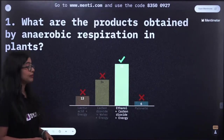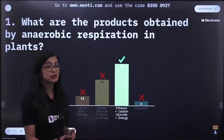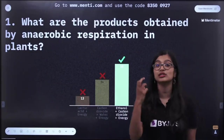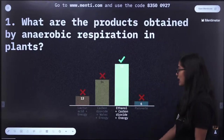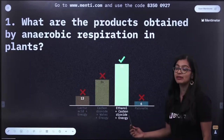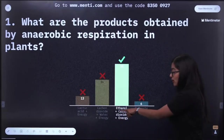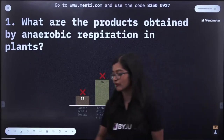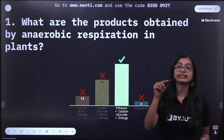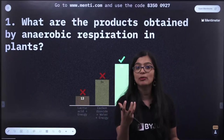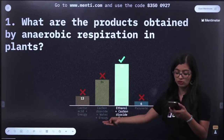The answer is C — ethanol, carbon dioxide, and energy. Anaerobic respiration occurs in the absence of oxygen. In plants and yeast, it produces ethanol, which is a two-carbon molecule, along with CO2 and very little energy due to the incomplete breakdown of glucose. Pyruvate is the intermediate formed in the cytoplasm; it either enters the mitochondria for aerobic respiration or is broken down further in anaerobic conditions.